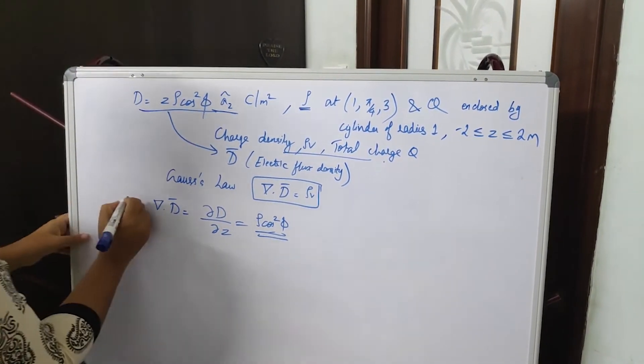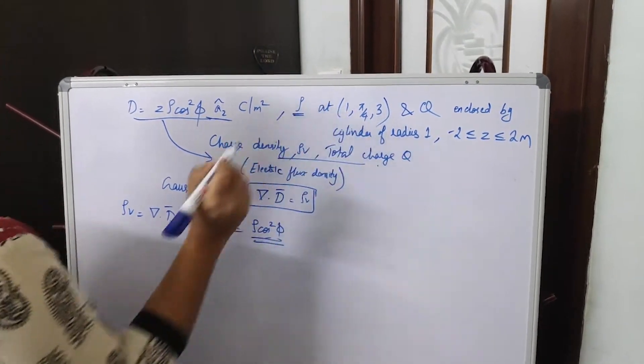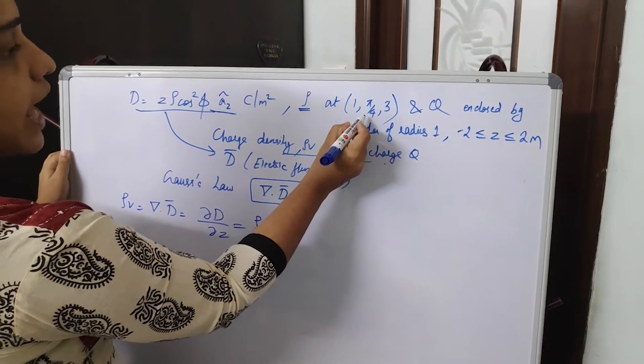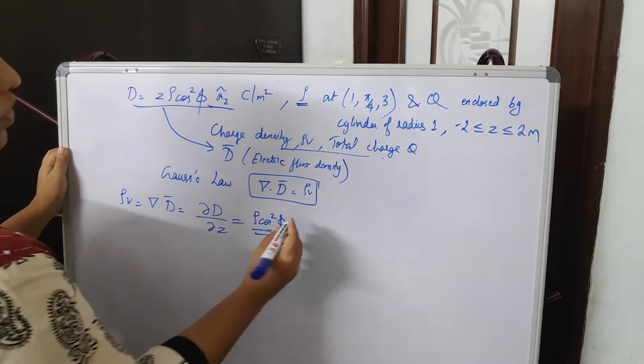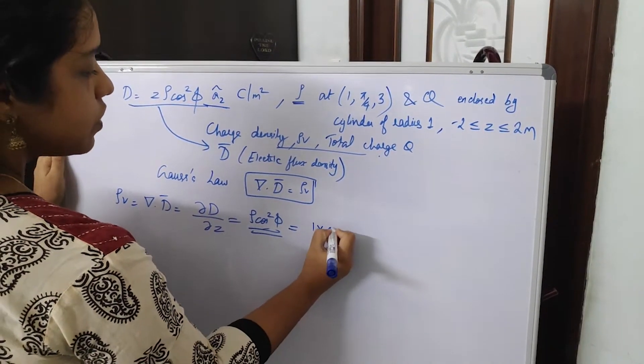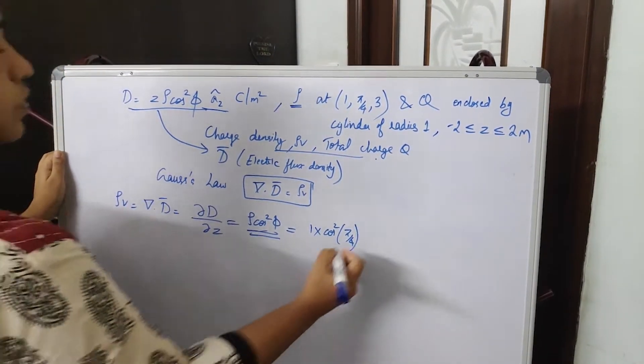This is the value of rho V, but you are asked to calculate the charge density at a value. So you have to substitute rho equals 1, phi equals pi by 4, and Z equals 3. But here there is no Z, so substitute for rho and phi, that is 1 into cos square pi by 4. As you know, cos pi by 4 is 1 by root 2.